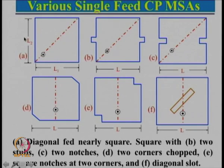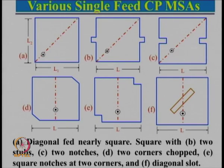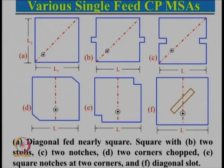As frequency increases, L2 will become resonant and that particular portion will become dominant. So from horizontal it will go to vertical, but in between it will go to circular when the frequencies of F1 and F2 are relatively close. We had seen the resonance curve also — at the crossover point we will get a good axial ratio.